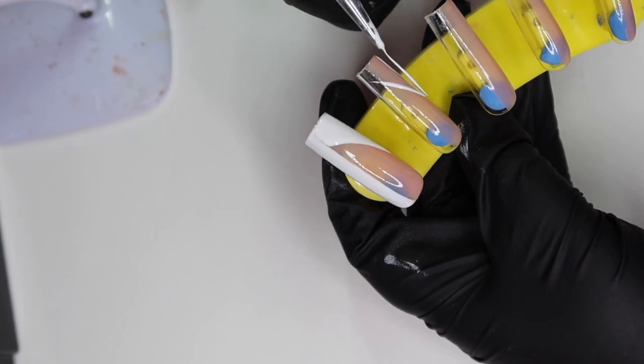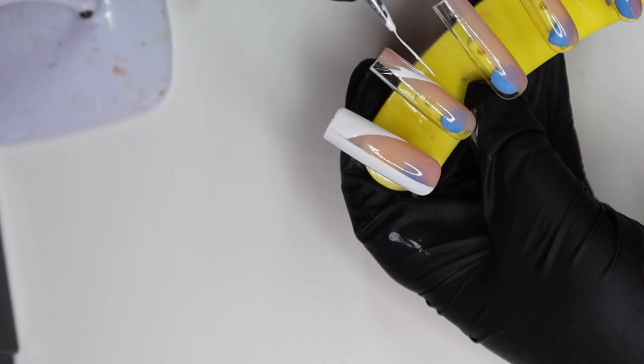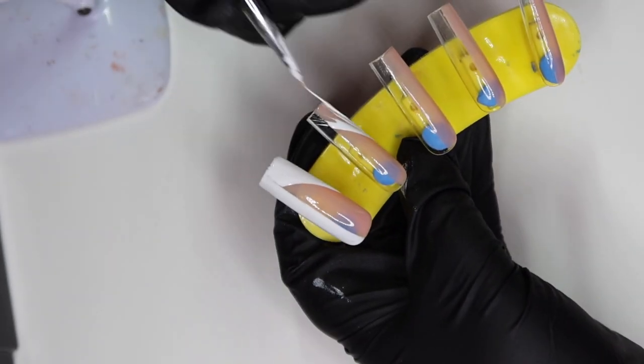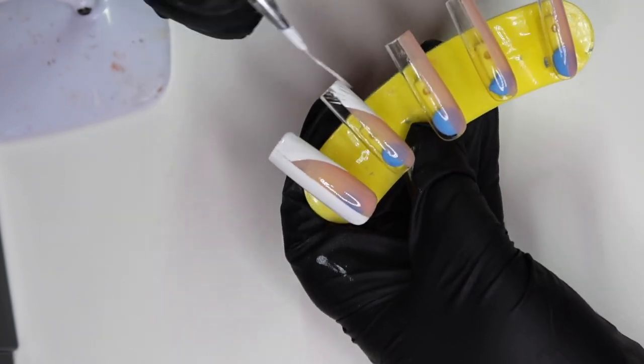So yeah, that's basically how you do it. You just do the French tip on one side, fill it in, and then take the brush, go down the middle so you keep that very straight line, and then fill on the other side.